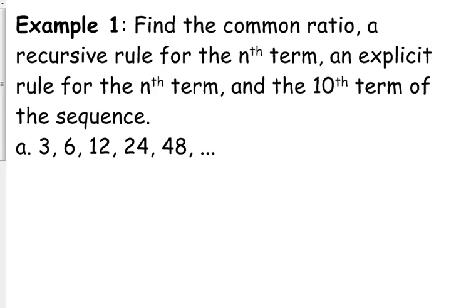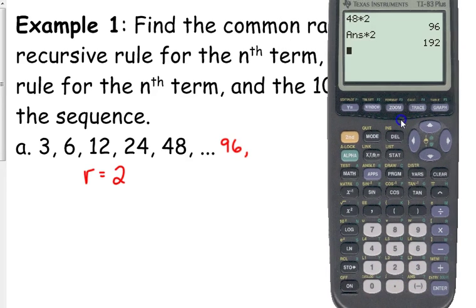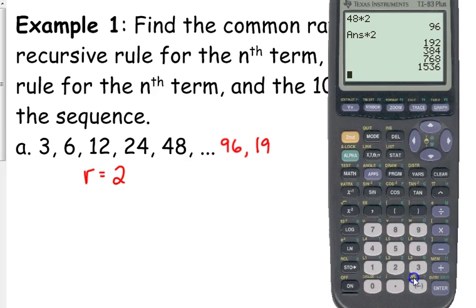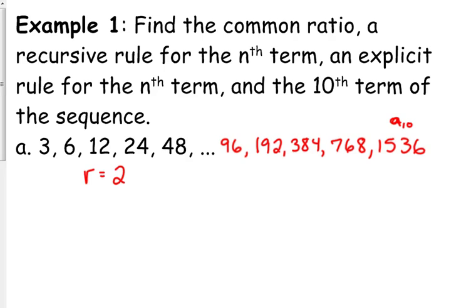So let's look at this sequence right here: 3, 6, 12, 24, 48. What is our common ratio? 2. We're multiplying by 2 every time, so r is equal to 2. Let's go ahead and figure out what the 10th term would be before we even get our rule, because we already have 5 terms. Going to 10 is not going to be that hard. 48 times 2 is 96. These numbers do get big. 96 times 2 is 192, then 384, 768, and 1536. So this should be our 10th term of our sequence.